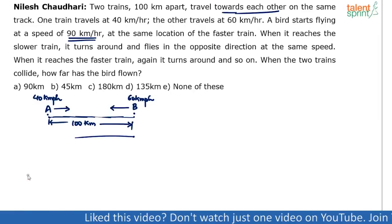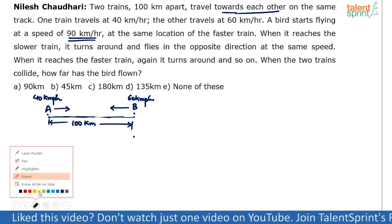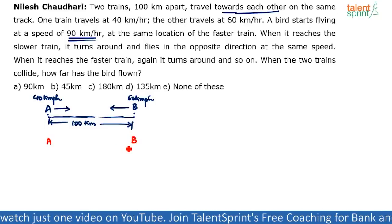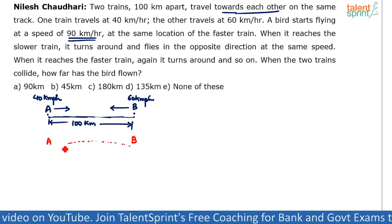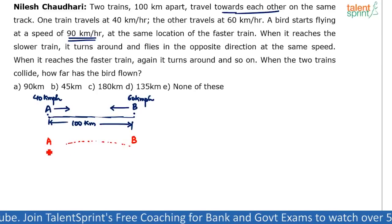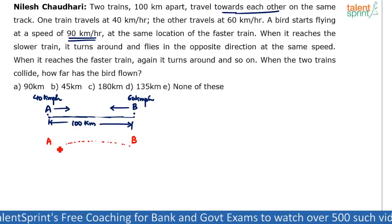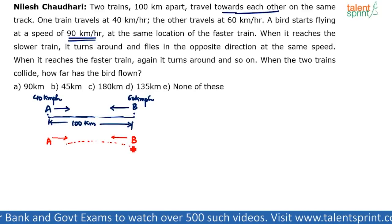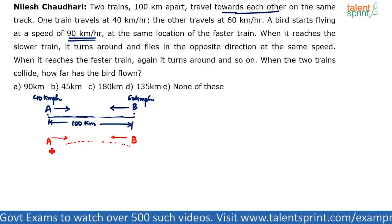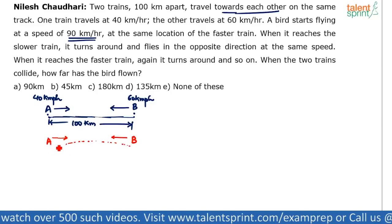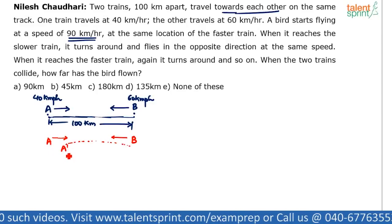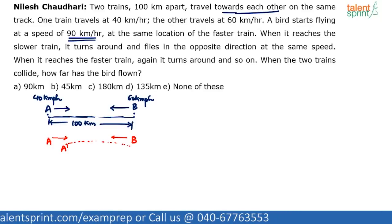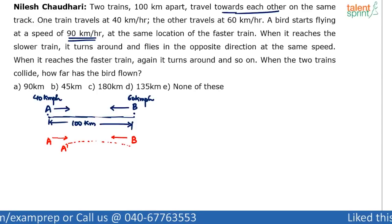Initially the trains are at positions A and B. The bird starts flying from B towards A, but it meets Train A at a new point — call it A-dash — because Train A has already moved. Both trains are always moving towards each other. The bird reaches A-dash, and so far it has traveled in this direction.